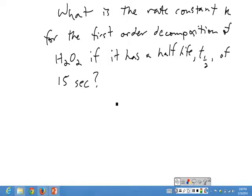Okay, so if you know the first-order half-life equation t½ equals 0.693 over k, if you happen to have that memorized, great. If not, you can always derive that from the first-order integrated rate law.